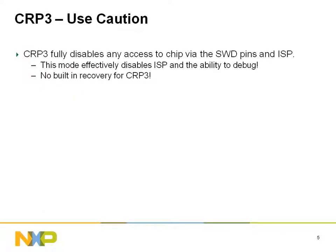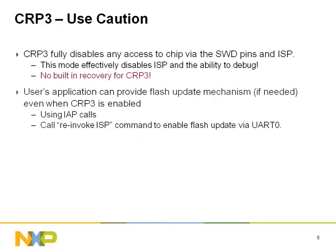CRP level 3 requires very deliberate use in its invocation. Once CRP 3 is enabled, there is no built-in recovery mechanism. This will effectively prevent any future debugging and the ability to update contents of flash memory. It is highly recommended that designs intending to make use of CRP 3 implement a recovery flash loader using IEP commands and test it thoroughly prior to deployment.